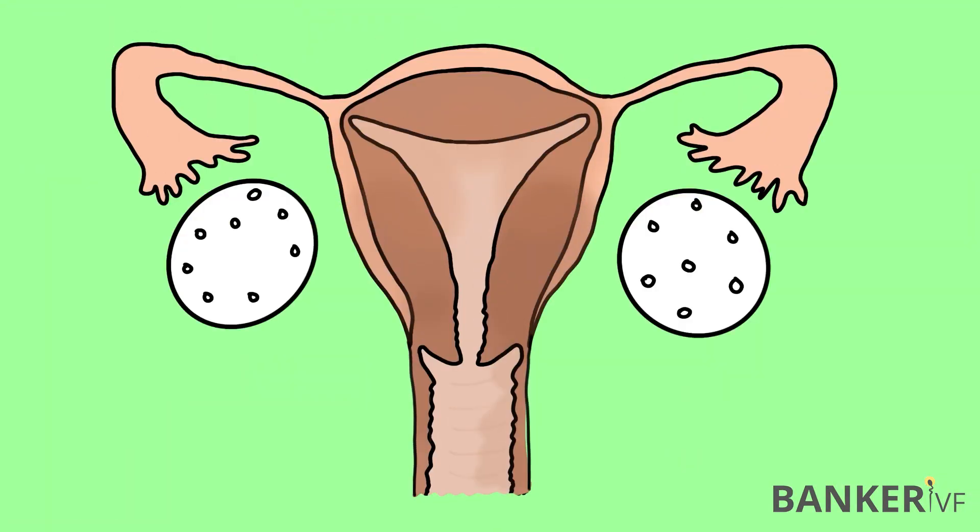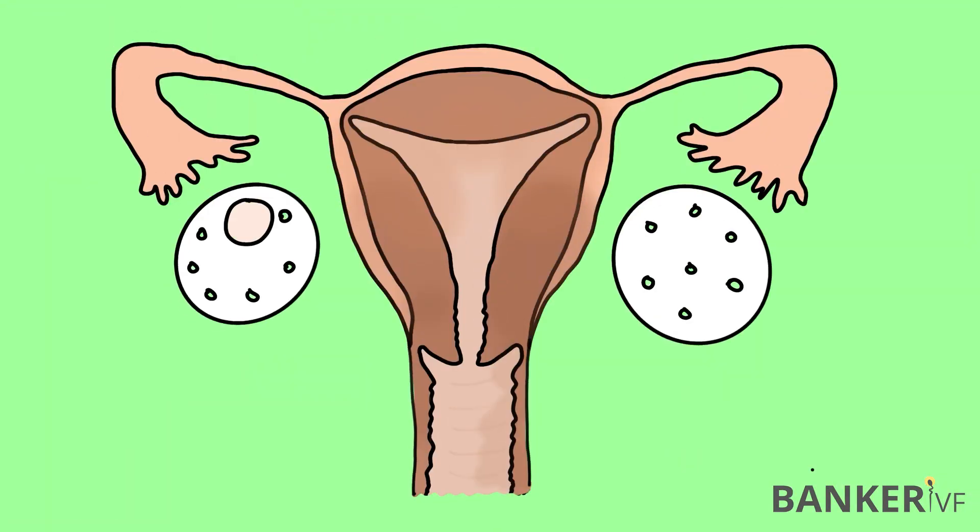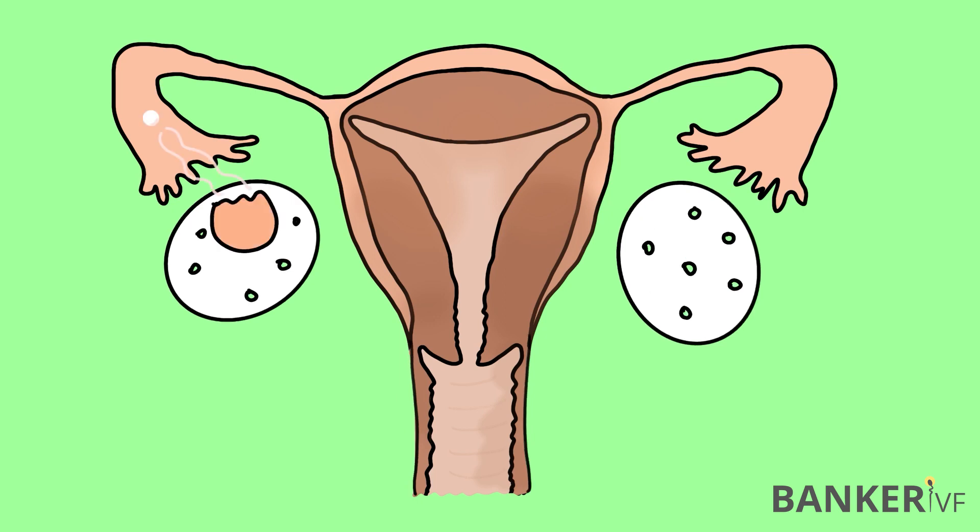Out of these 10 lakh eggs, only 4 lakh reach the stage of puberty. Every month when a woman menstruates and starts a new cycle, a group of these follicles is recruited, and out of this group one follicle is selected by the ovary as the dominant follicle. This follicle grows, matures, ovulates, and can give a successful pregnancy. The rest of the follicles are discarded by the body by a process called atresia, in which they stop growing.